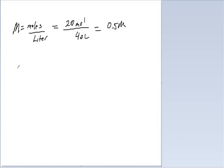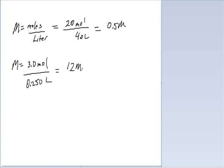The second question: what's the molarity of a solution with three moles dissolved in 250 milliliters of solution? We take the number of moles — 3.0 moles — and divide it by the number of liters, so that's 0.250 liters. When we calculate that, we get a 12 molar concentration.